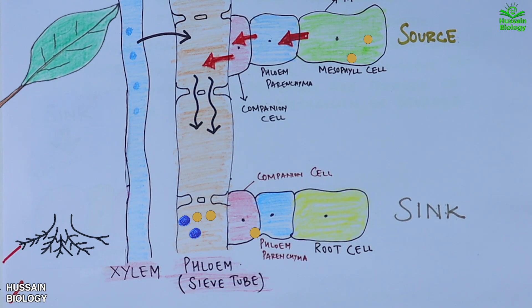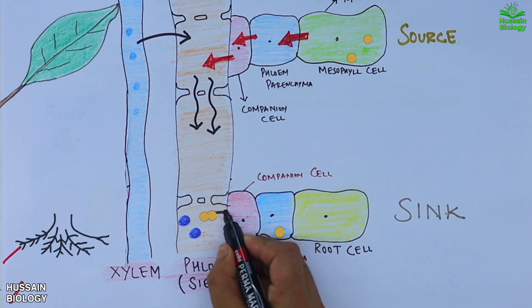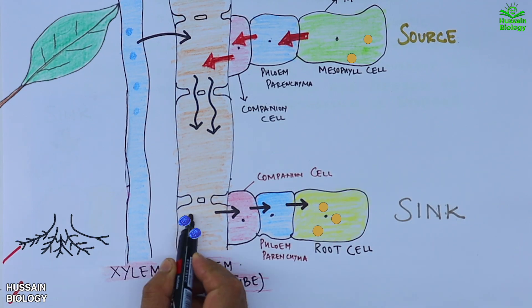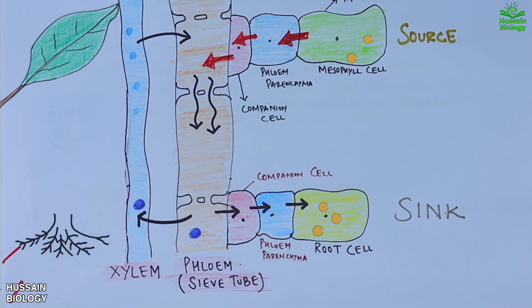At the root region, phloem unloading takes place where sucrose is transported to companion cells, then to parenchyma, and finally reaches the root cells. In the meantime, water in the sieve tubes is sent back to the xylem, lowering pressure at the sink end. This is what the mass flow theory describes.